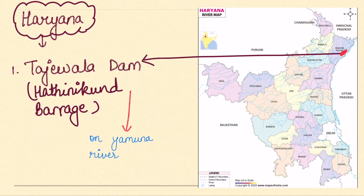Next state is Haryana. The Yamuna River flows through Haryana and exits near Delhi. So Yamuna Nadi passes through Haryana.